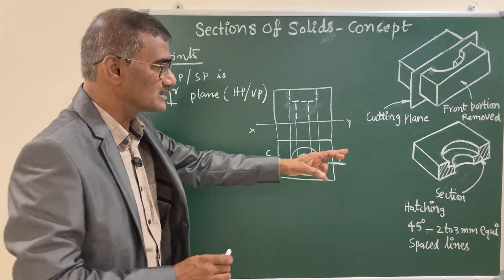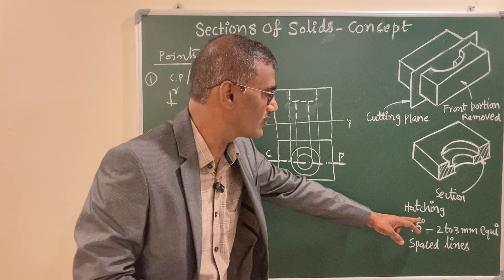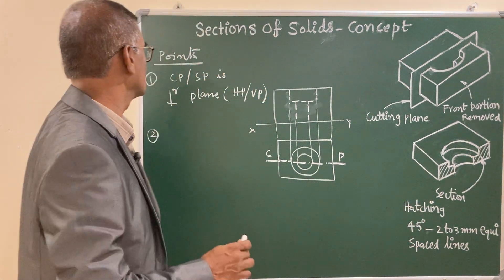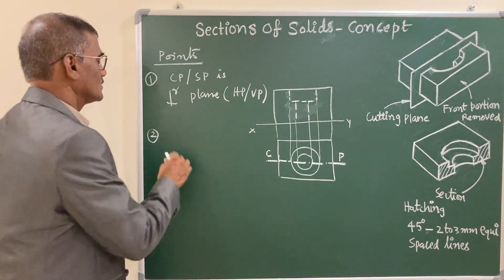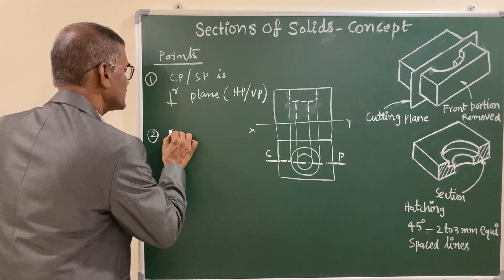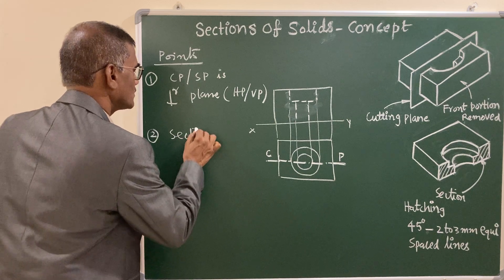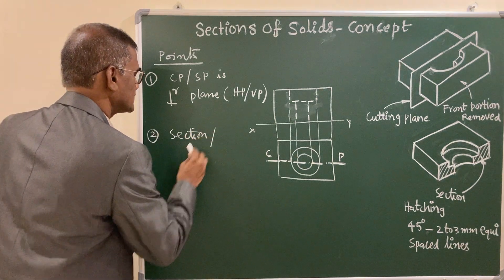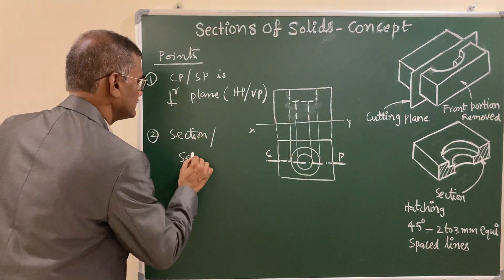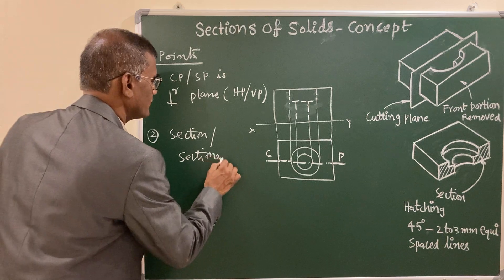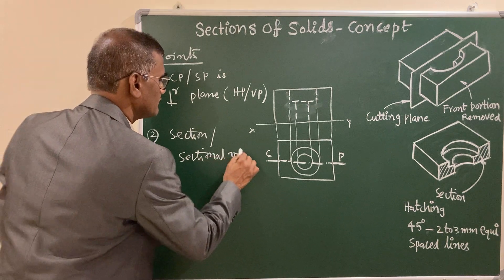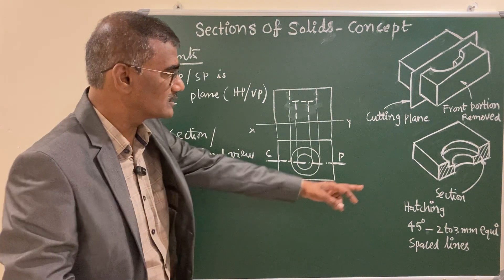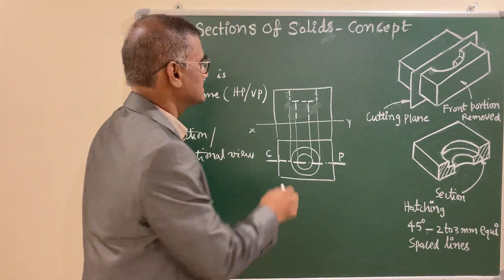That section is usually indicated with hatching, so you are going to get a sectional view - it is simply called a section or sectional view. This sectional view you indicate with hatching.